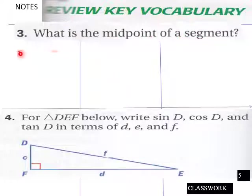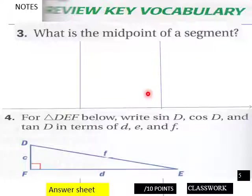Page five. What is the midpoint of a segment? It's just a question, students, respond with full sentences. Then number four, for triangle DEF below, write sin D, cos D, and tan D in terms of d, e, and f. You've got ten points here for page five. I'm going to let you handle that, students, on your own. You got ten points here for page five.